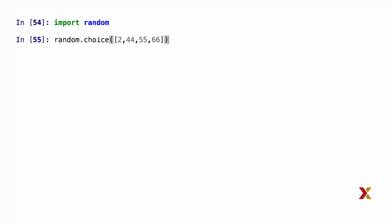2, 44, 55, and 66. And when I run the random.choice, Python returns one of these numbers back to me. If I repeat the same line, I'm going to get a different answer because Python is just picking one of those objects at random.